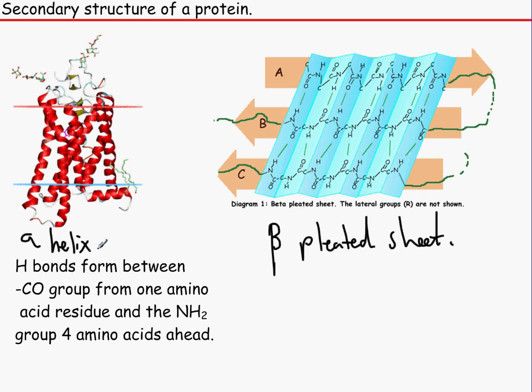Basically, what happens is that the hydrogen bonds form between the carboxylic group from one amino acid residue - remember, the reason why it's a residue is that H2O has been released from this, so it's not actually an amino acid, it's just a residue, a leftover basically. And it basically forms with the NH2 group, four amino acids ahead.